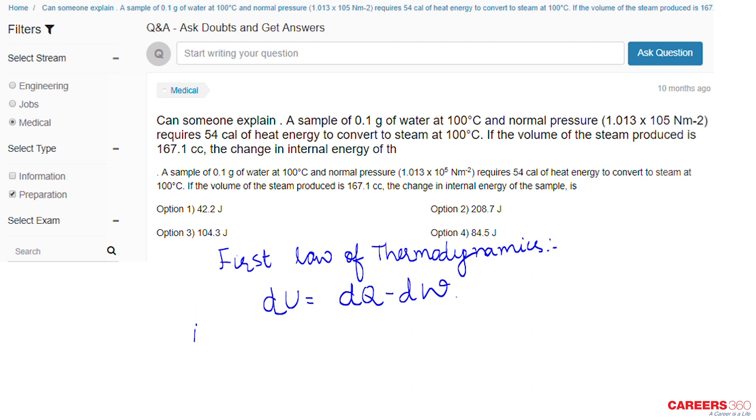Pressure P is 1.01 × 10^5 N/m². The heat required is 54 calories. To convert this to joules, we multiply by 4.2, since 1 calorie equals 4.2 joules. So, 54 × 4.2 = 226.8 joules. This is the heat required.